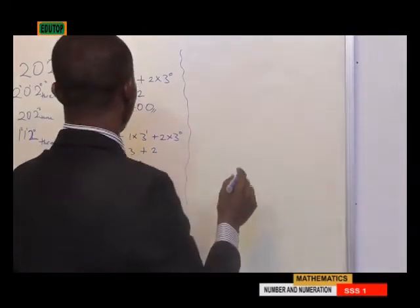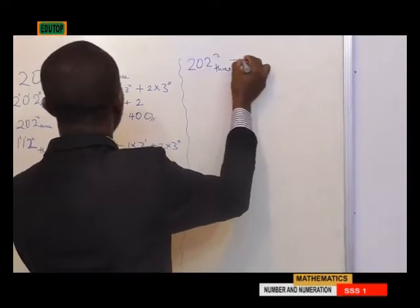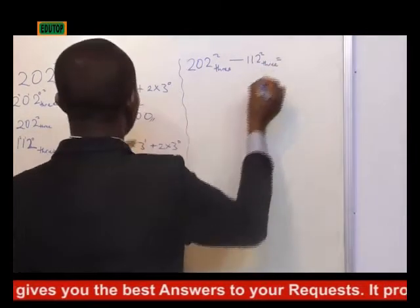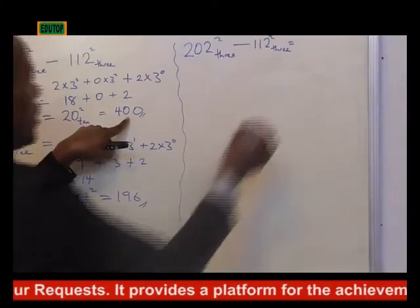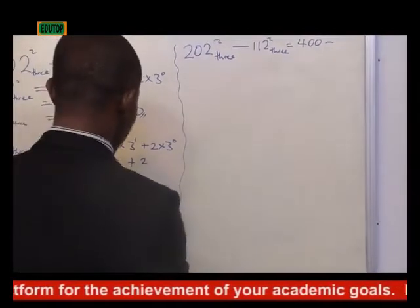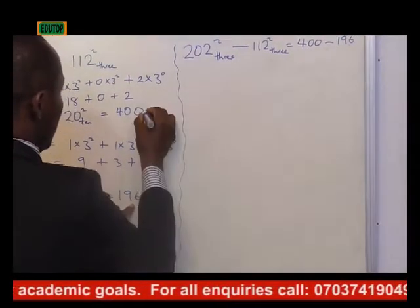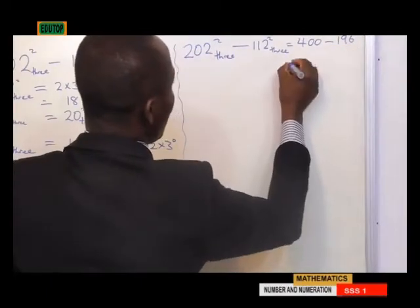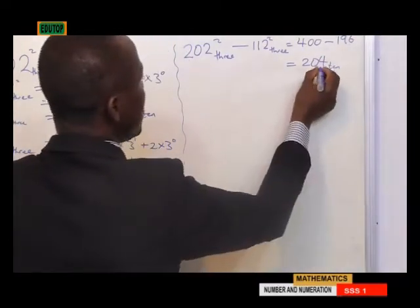We are now doing the subtraction: 202 base 3 squared minus 112 base 3 squared. 202 base 3 squared gives us 400 in base 10. Minus 112 base 3 squared gives us 196. The answer is 400 minus 196, which equals 204. Mind you, this result is in base 10. So what we will now do is convert 204 base 10 back to base 3.